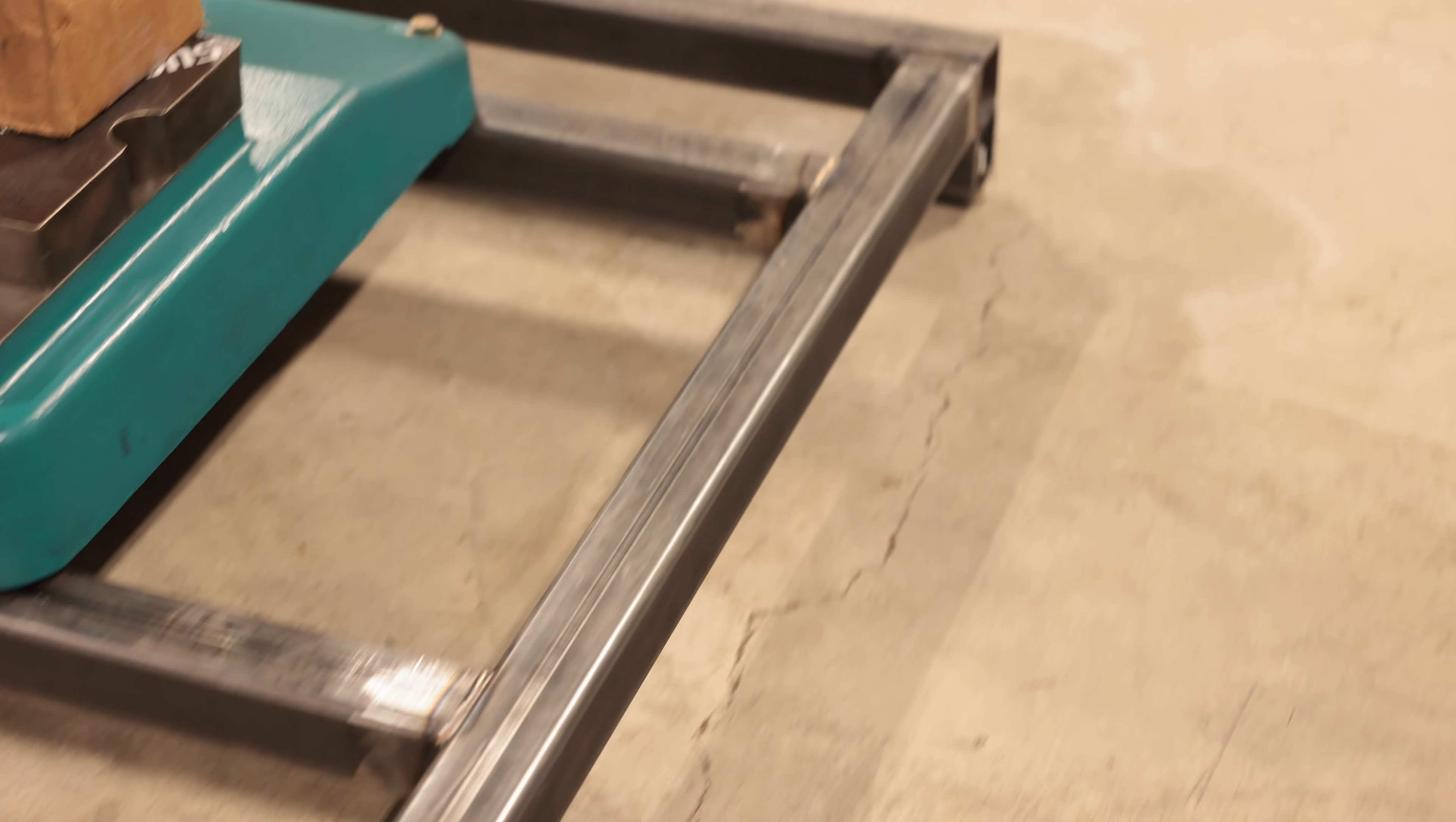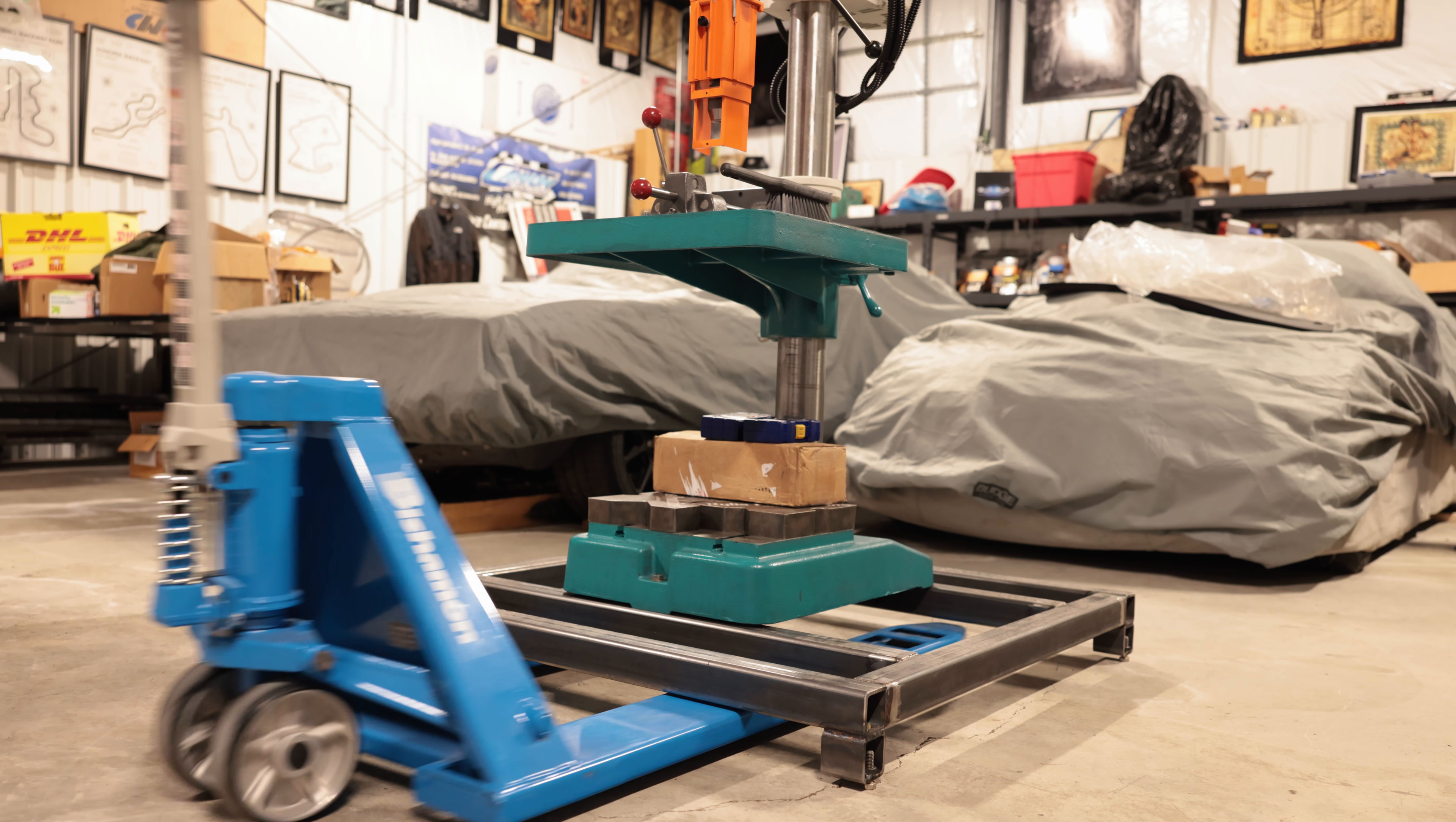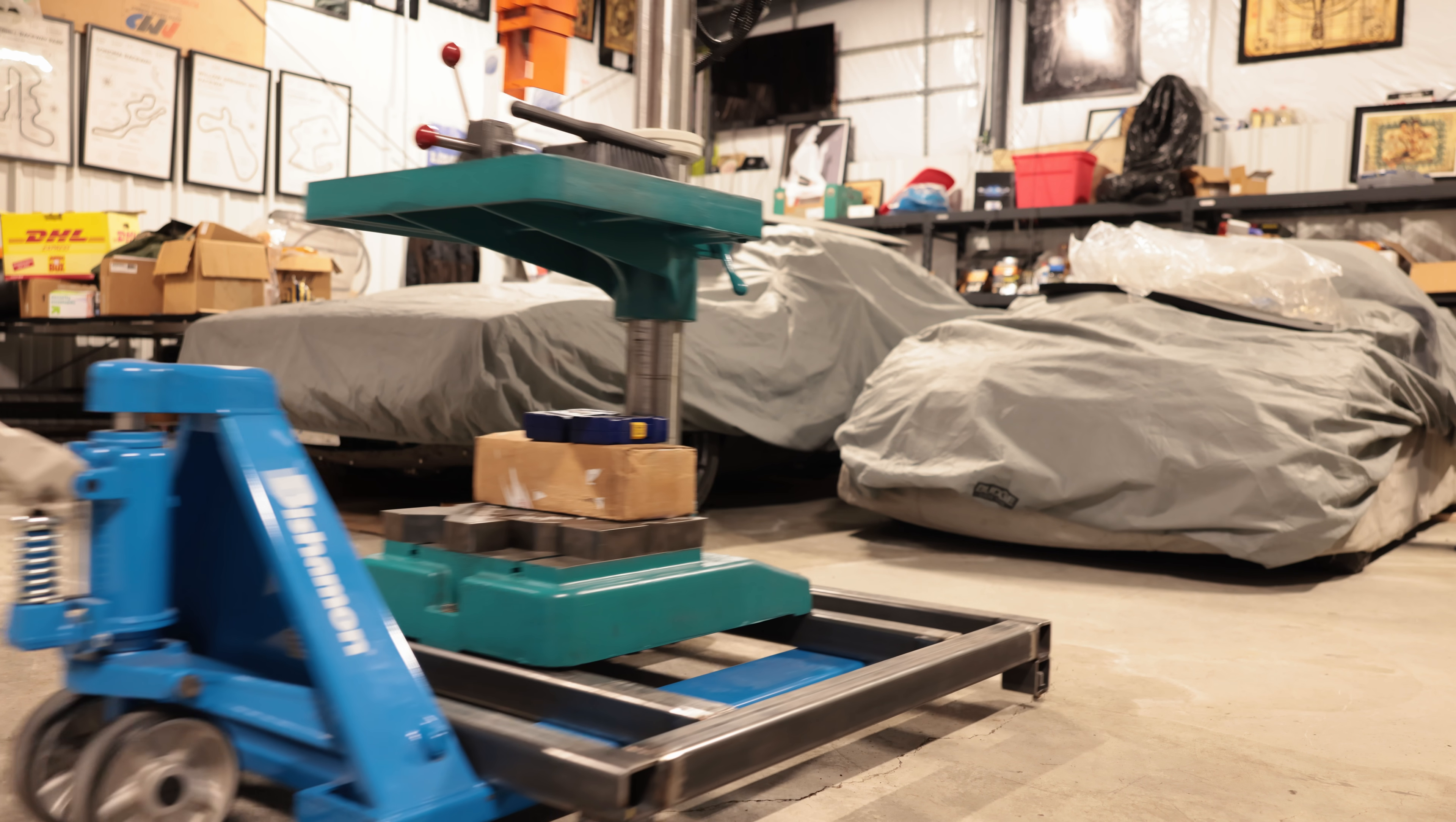Our drill press is bolted onto our industrial heavy duty steel pallet. This adds another 150 pounds to the drill press's 620 pounds making it very difficult to topple over. Yet with any pallet jack, our indestructible steel pallets are easily moved around the shop.